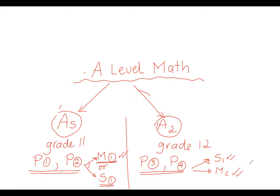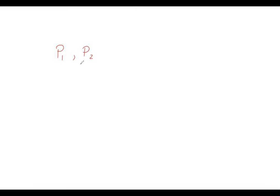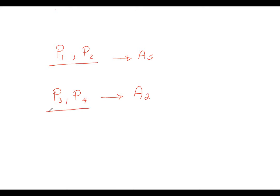تعال نقول تاني: عندك P1 و P2 كل الناس هتاخدهم في الـ AS. وبعدين P3 و P4 كل الناس هتاخدهم في الـ A2. يبقى هنا عندك Four Papers Obligatory. لازم عشان تكمل الـ AS تاخد M1 أو S1. وبعدين هنا في الـ A2، لو خدت M1 ممكن تاخد M2 أو S1. فلازم في الآخر يبقى عندك Six Papers.